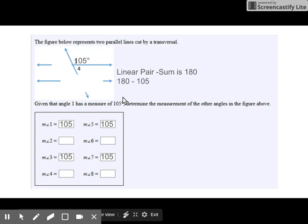So to find angle four, we subtract from 180 degrees. So angle four is going to be 75 degrees.